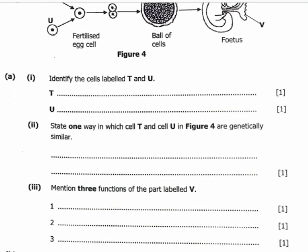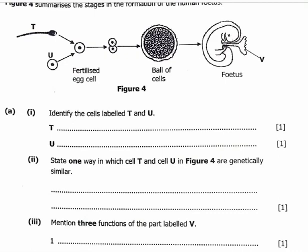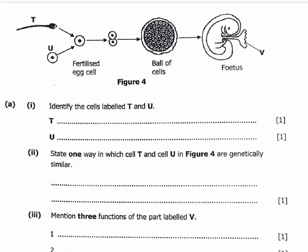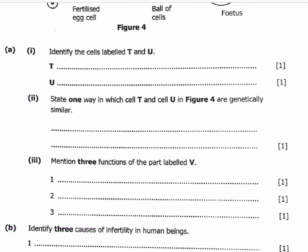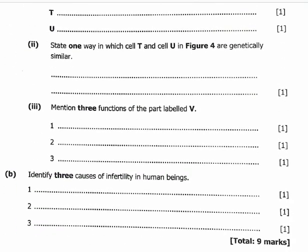The next question asks us to mention three functions of the structure labeled V, which is the placenta. The function of the placenta is that it provides the baby with oxygen and nutrients, it removes harmful waste and carbon dioxide from the baby, and it produces hormones that help the baby to grow.